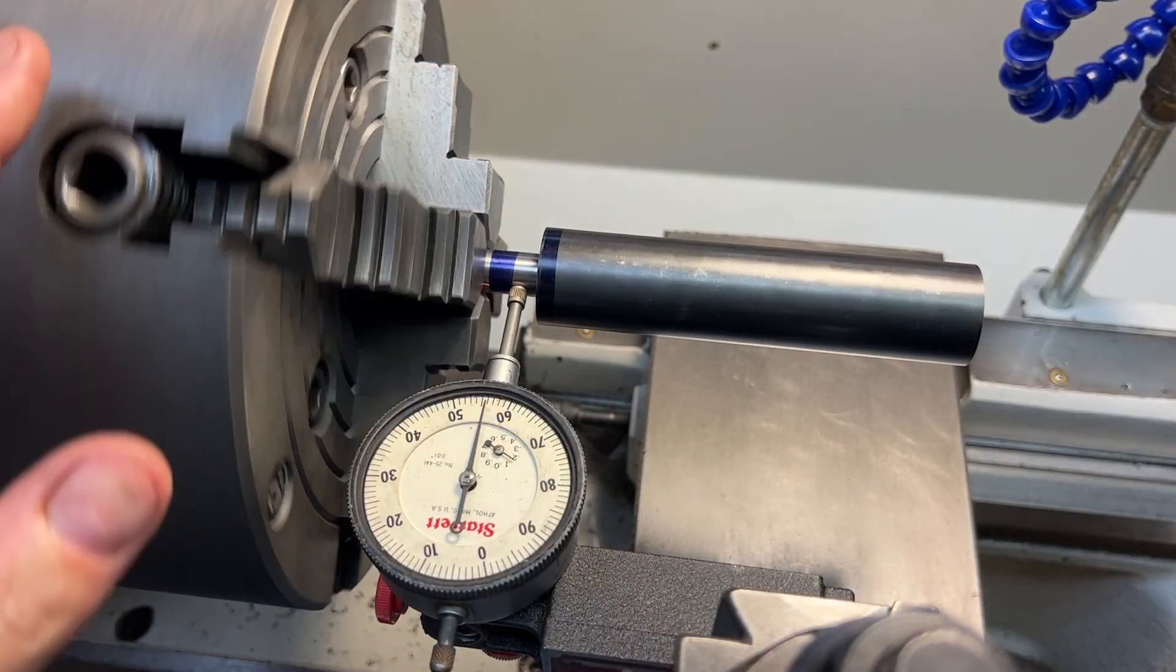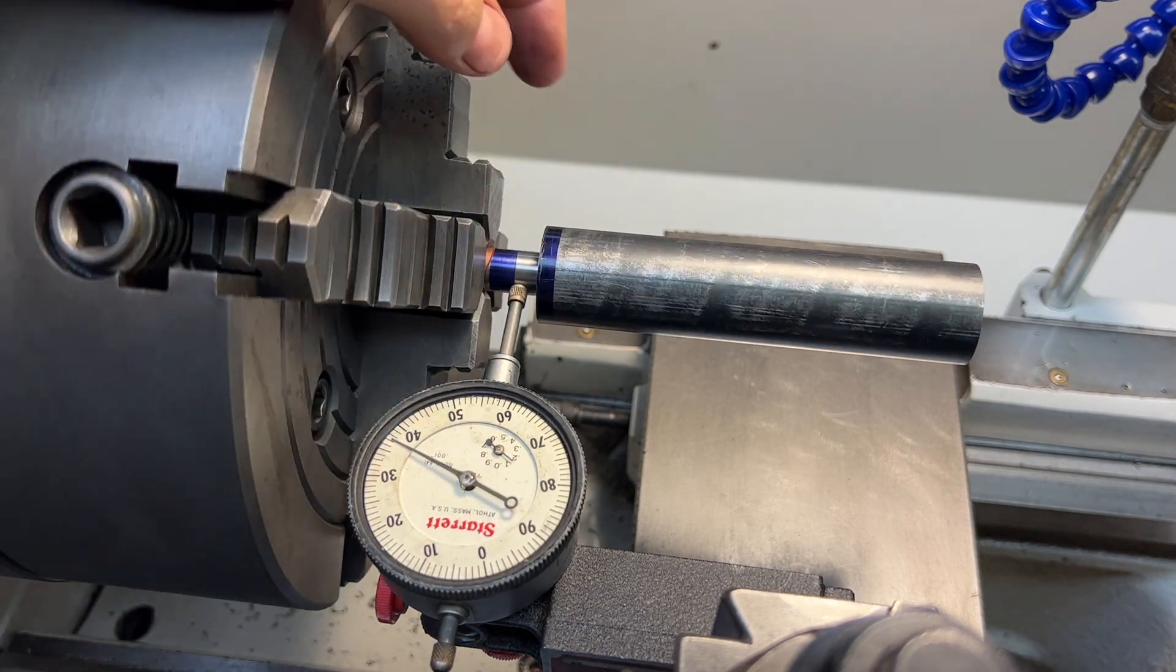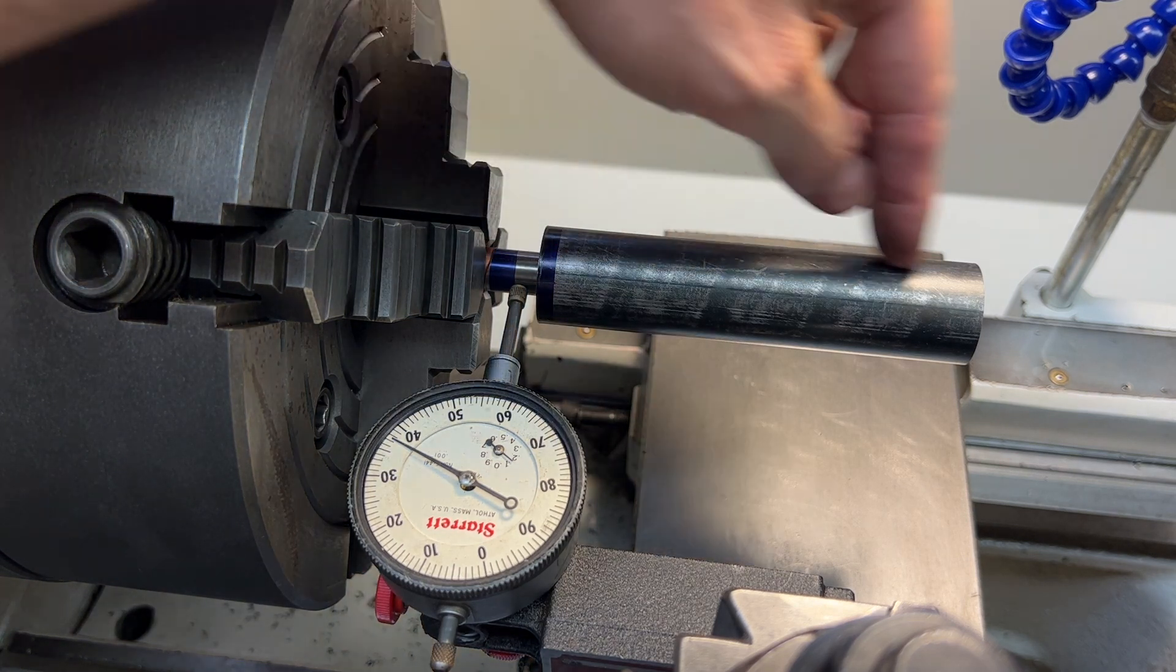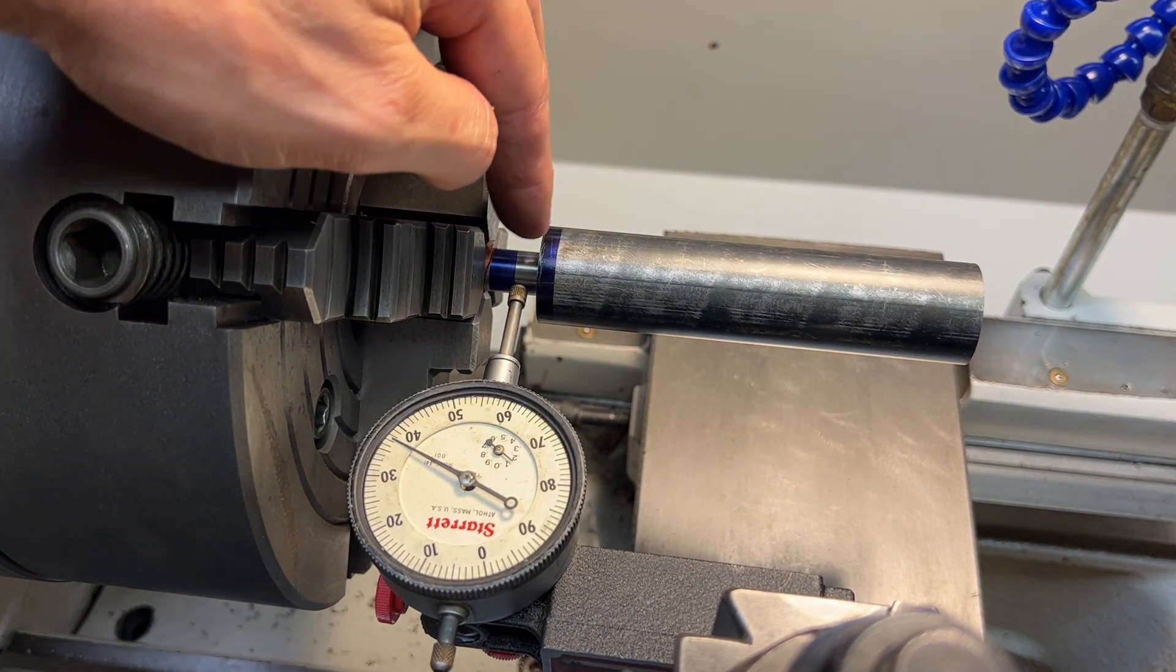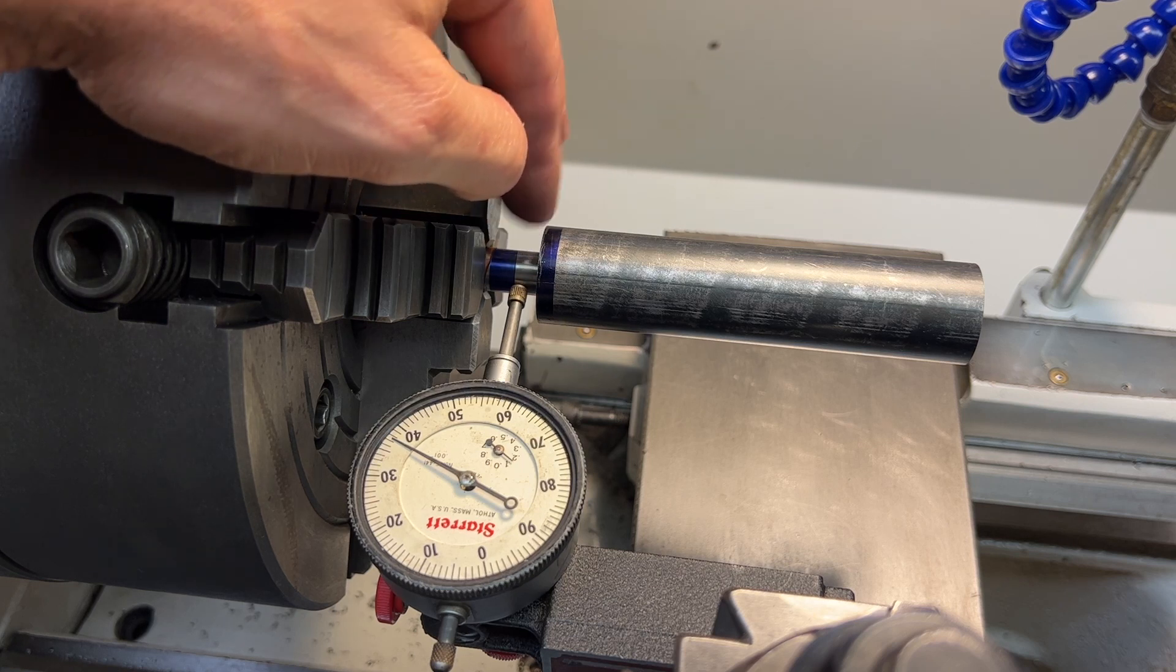All right, we've got our part set up in the four jaw now and we are going to dial in right against this surface here. This should give us an acme thread that is concentric with this surface here which is what the bearing inside of the tailstock will ride on.